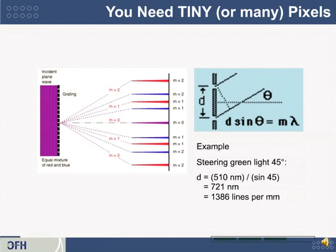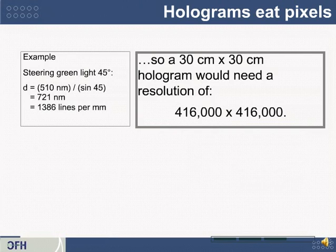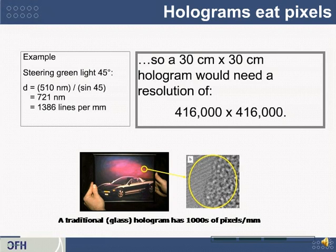So if you can imagine a computer display requiring it, that's a lot of pixels. So how many pixels is that? Well, in the case of green, where you need 1,400 lines per millimeter, then a 30 centimeter by 30 centimeter hologram, that's a foot by a foot, needs a resolution of 416,000 pixels by 416,000 pixels. And this is exactly the same order of magnitude as a traditional glass hologram. If you were to look at it under a microscope, that's sort of the grain density of the little silver grains in the holographic film.